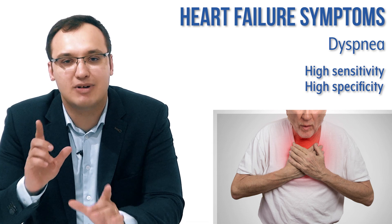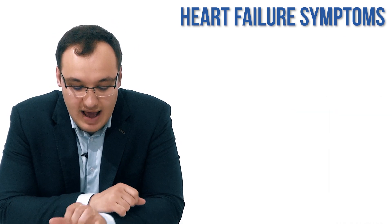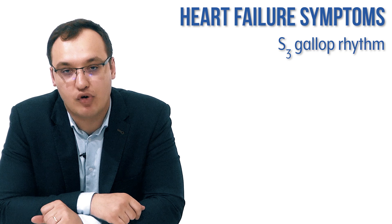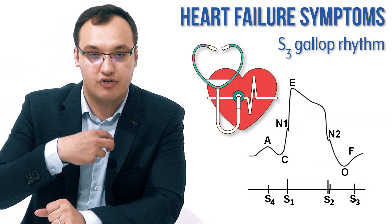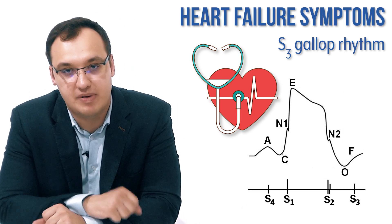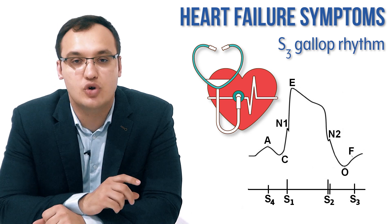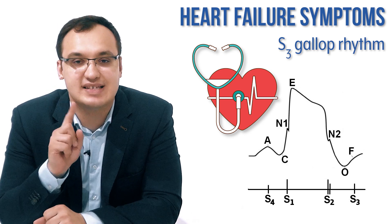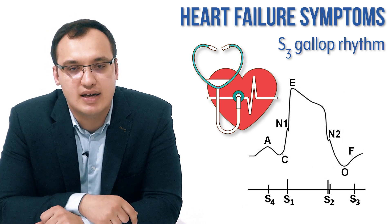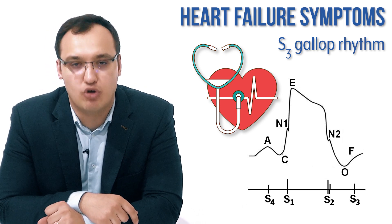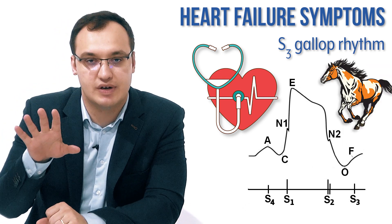It's almost the same thing, but not really. For example, we have S3 gallop rhythms. These are when we are auscultating the heart and we hear an extra heart sound — not heartbeat, heart sound. Usually we have two sounds, S1 and S2, but when we hear an S3 sound, this is called gallop rhythm because it sounds like a horse is galloping — three sounds.